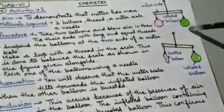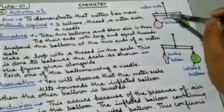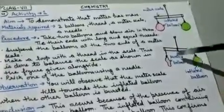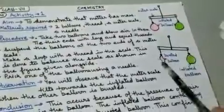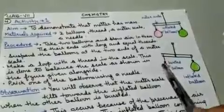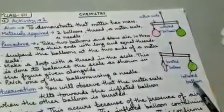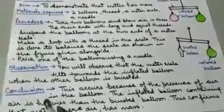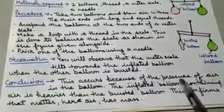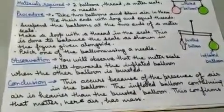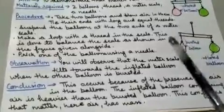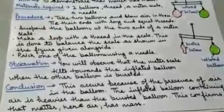When you tie both balloons to the meter scale, the scale is straight because both balloons have equal mass of air. When you prick one balloon with the needle, the air in that balloon escapes out, and the meter scale tilts towards the inflated balloon. This happens because the inflated balloon is heavier than the burst balloon — it is heavier because of the presence of air in it. Conclusion: The inflated balloon containing air is heavier than the burst balloon. This confirms that matter — here, air — has mass. Since air is a state of matter, we can say that matter has mass.